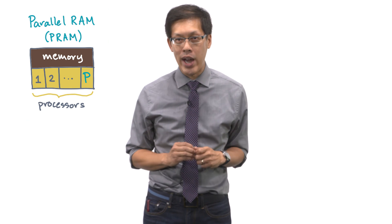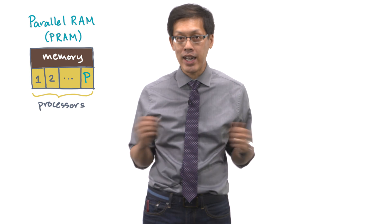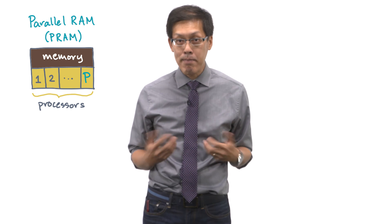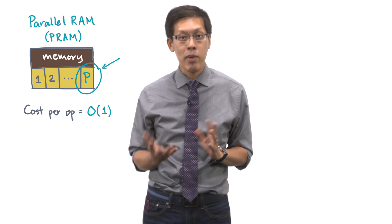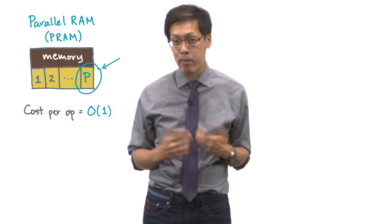Now what are the alternatives to the serial RAM model? Well, a first alternative is the parallel RAM or PRAM model. Instead of one processor, there may be many. They all see the same memory. And you still assume a bounded constant cost per operation. But you get to work with more than one processor.